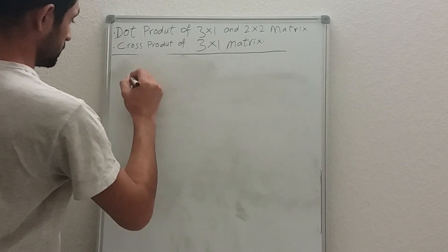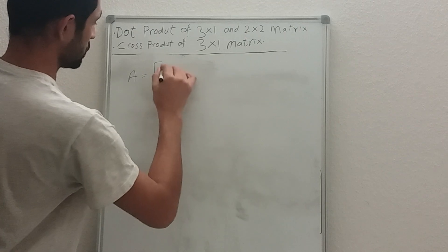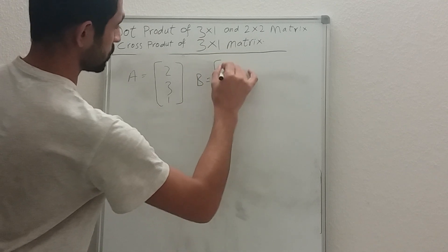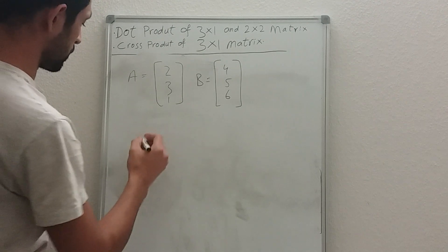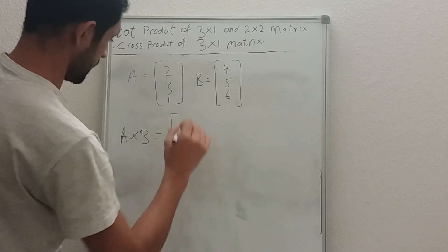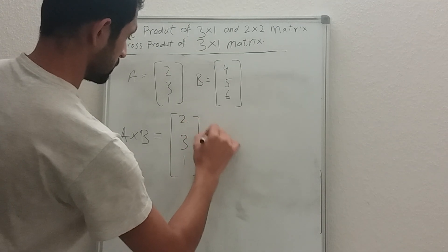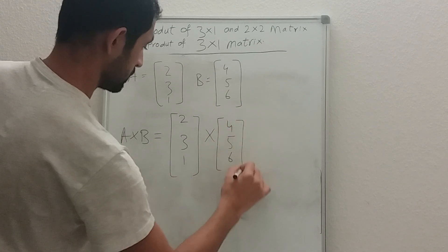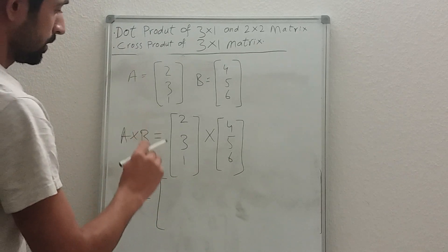So we have matrix A equal to two, three, one and matrix B equal to four, five, six — the numbers can be different, no problem. We need to do the cross product of A and B: two, three, one cross four, five, six.